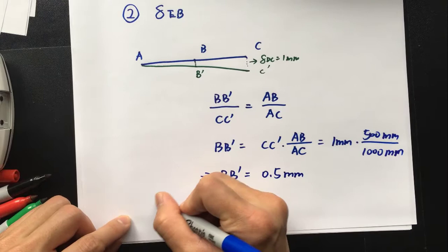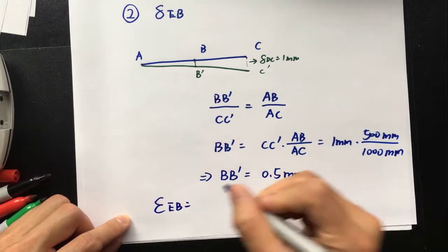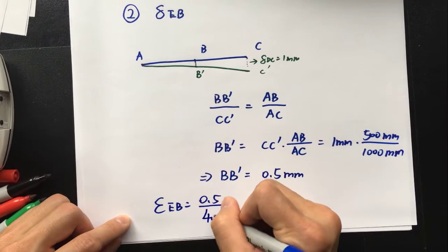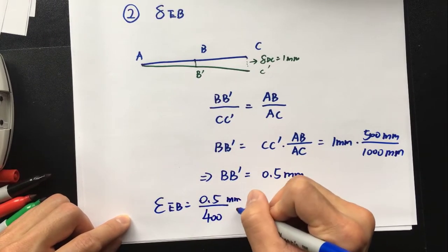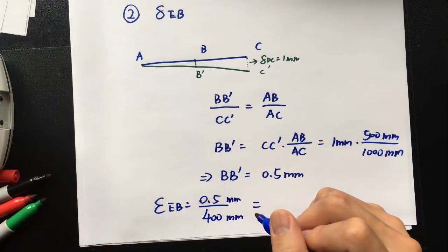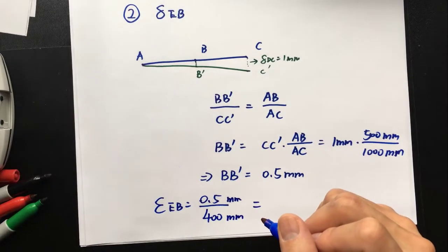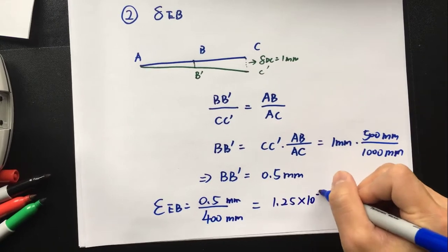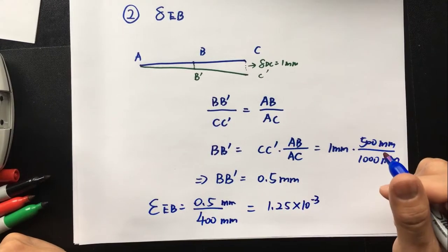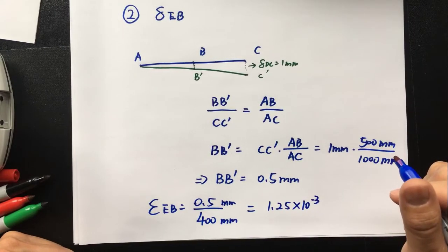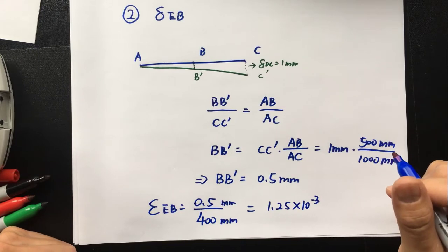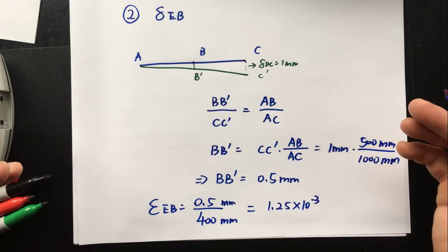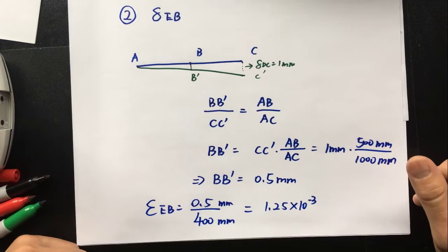Therefore, the normal strain of EB equals the change of length 0.5 over its original length 400, which gives 1.25 times 10 to the negative 3. This is a simple example of how to find normal strain based on the change of length, using geometry knowledge.